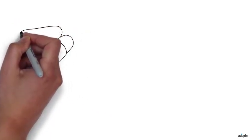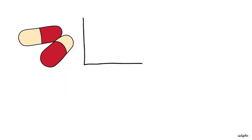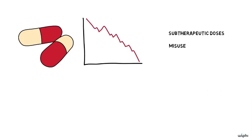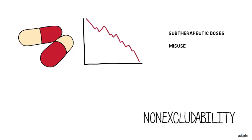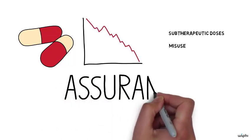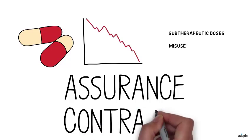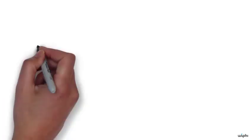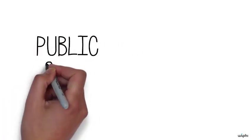Public goods that are global and intergenerational are much more difficult to provide or preserve. Antibiotics are an example of a powerful drug whose efficacy declines as their use increases, especially when they are used at subtherapeutic doses or misused to treat infections that they lack the power to cure. Preserving the power of antibiotics to cure infections is a public good because effective antibiotics are a non-rival, non-excludable resource whose benefits spill across borders and across generations. Assurance contracts are useless for cases like this because the transaction costs associated with bargaining between billions of people are too high, so we need more subtle ways of preserving public goods like antibiotics.